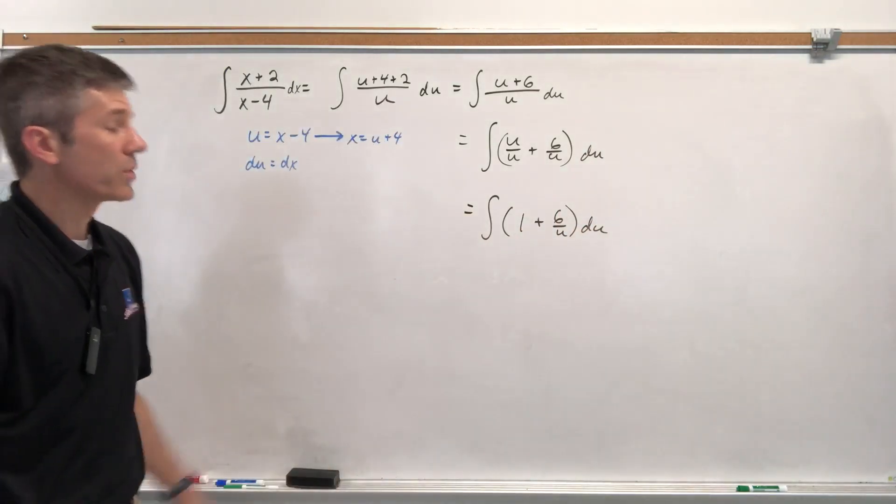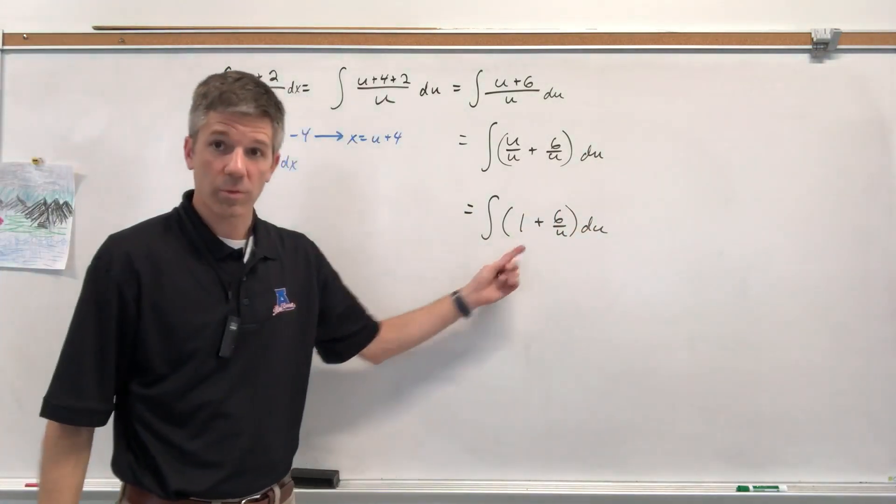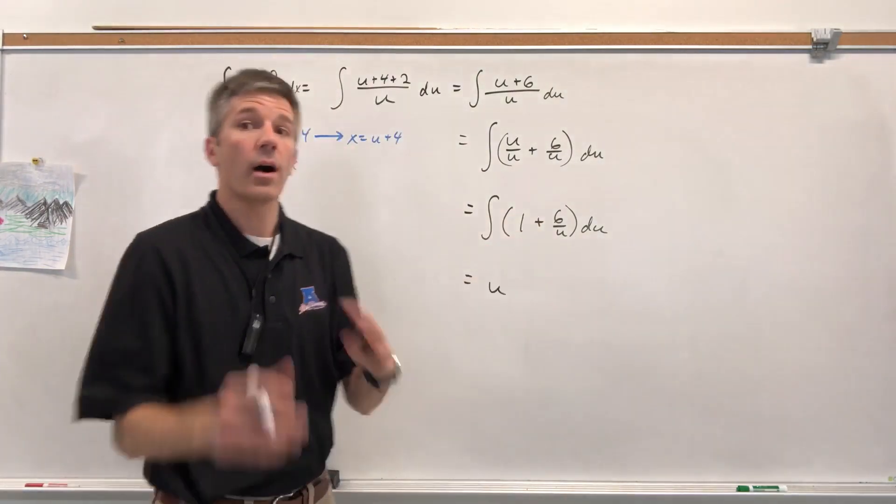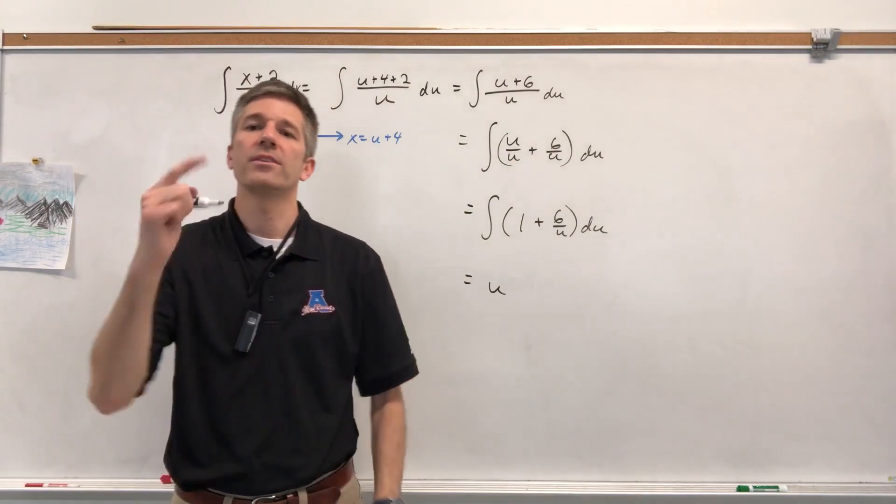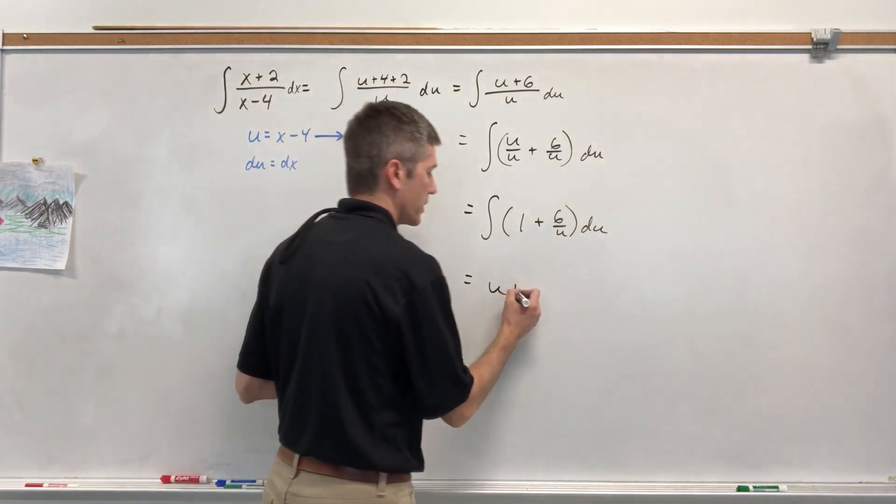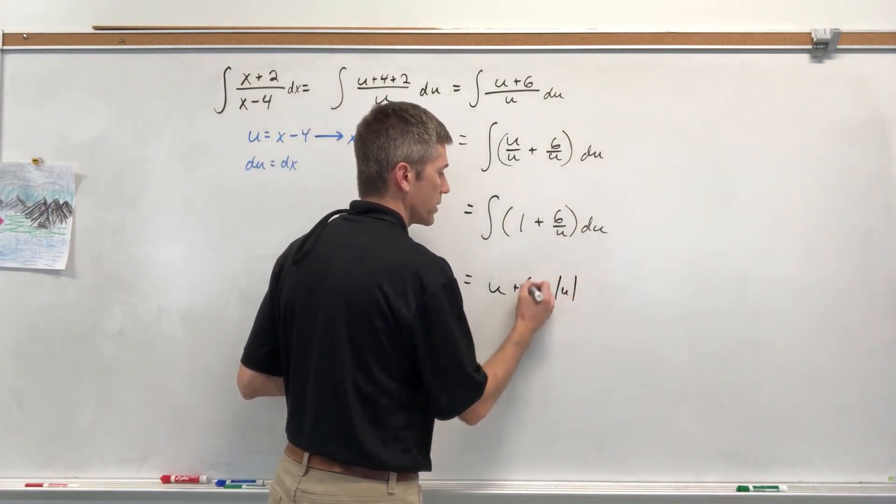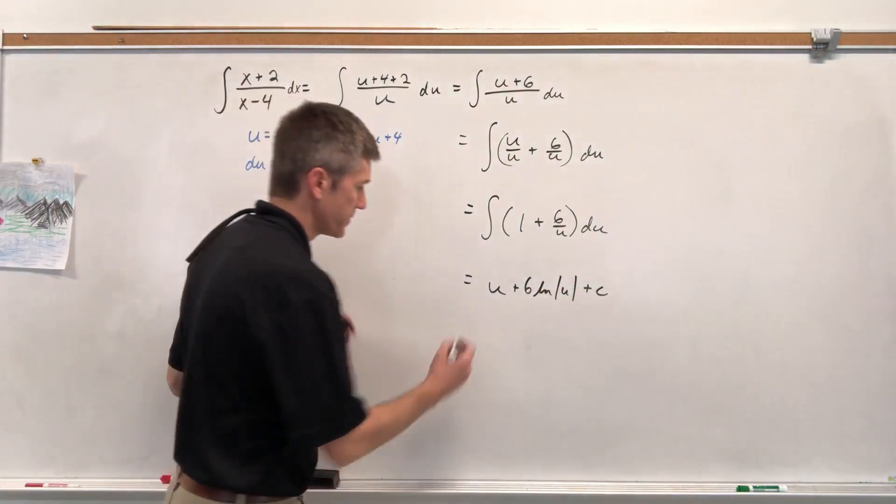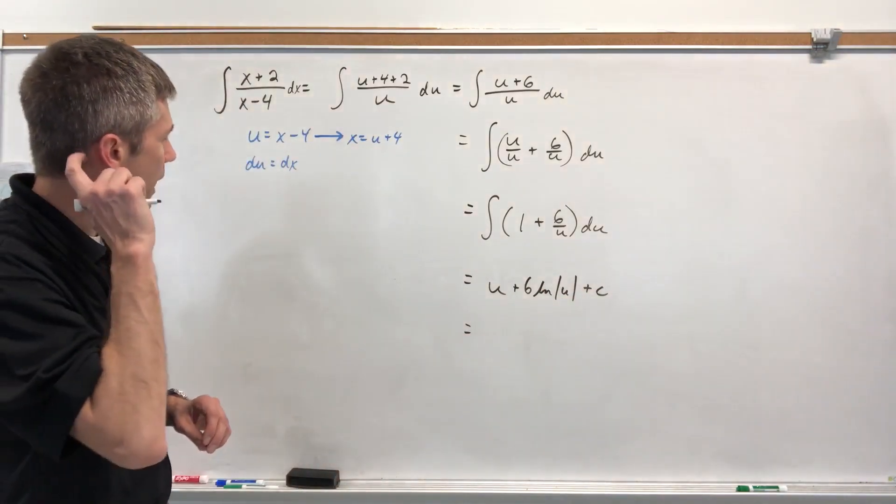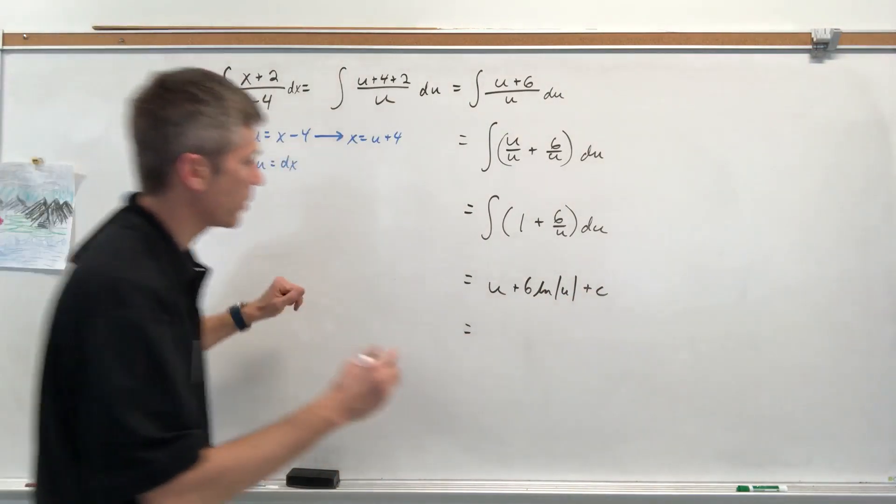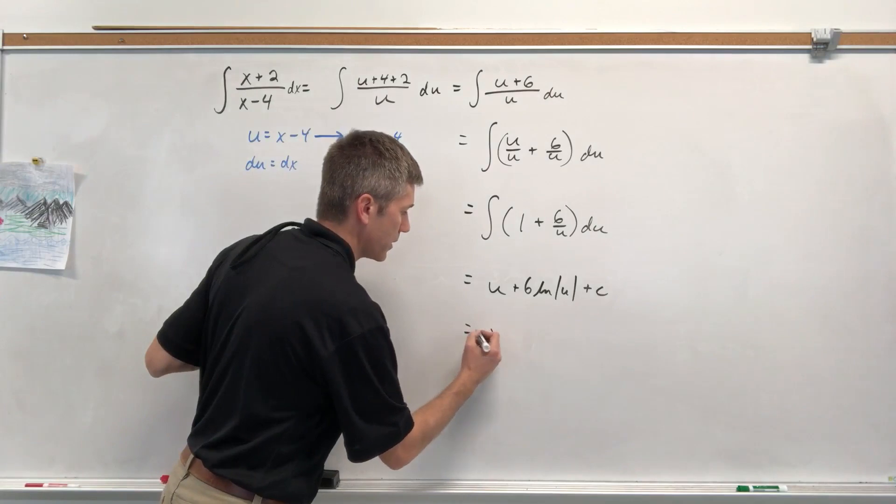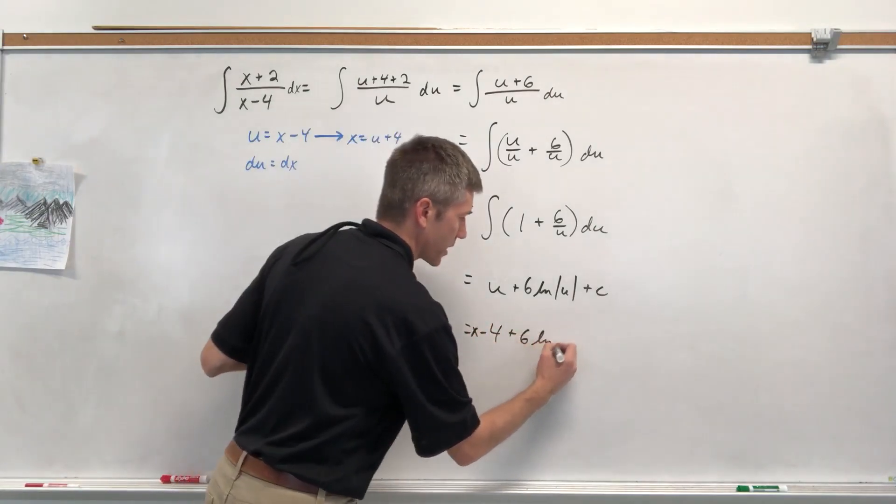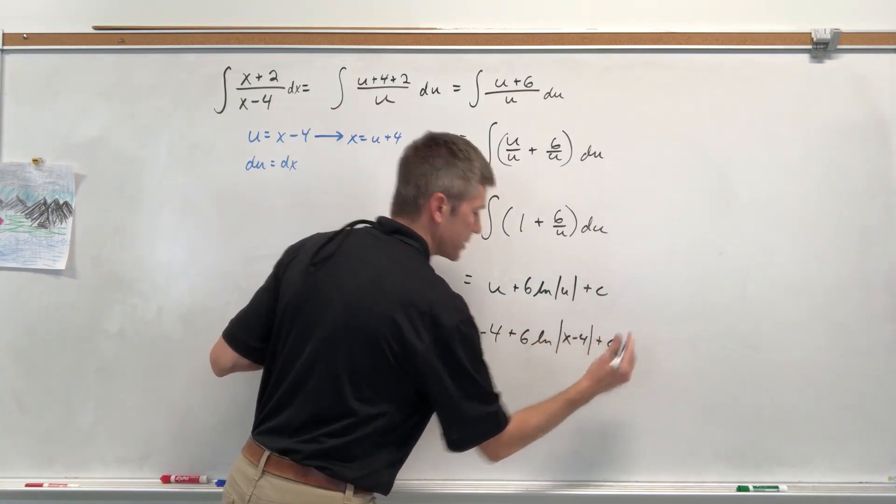Okay. Fantastic. So the antiderivative of 1 with respect to U would be U. The antiderivative of 6 over U. All right. You have a U in the denominator. It is to the first power. So it is going to be natural log of U, but there was a 6. There we go. Someone's knocking at my door. I'm going to keep going. So we're going to have U, which is X minus 4. And they're continuing to knock. Plus 6.